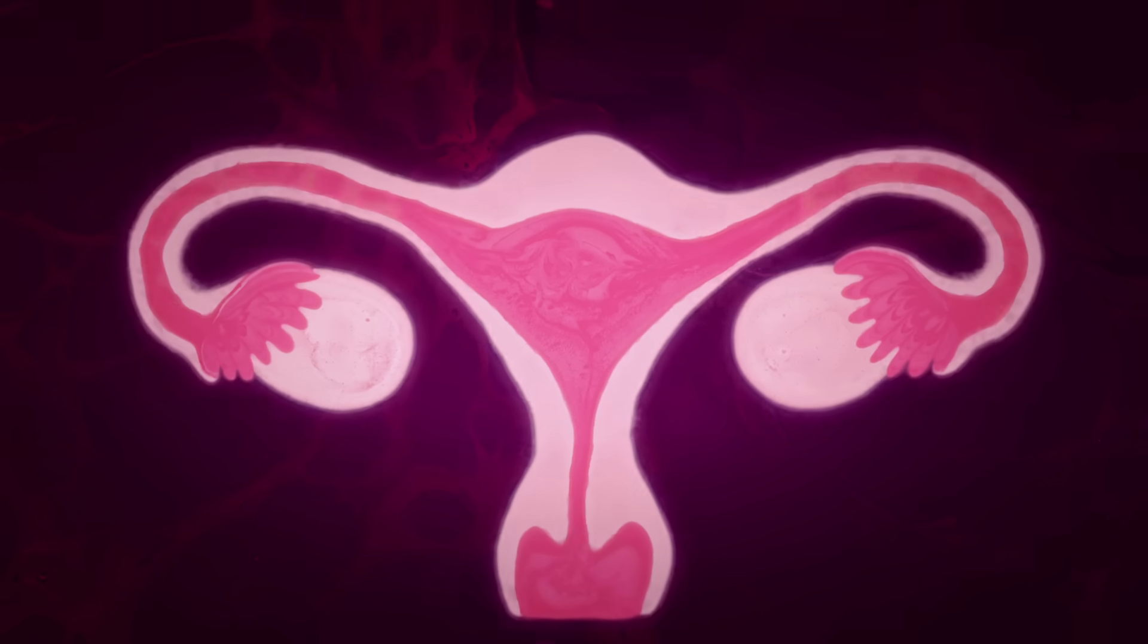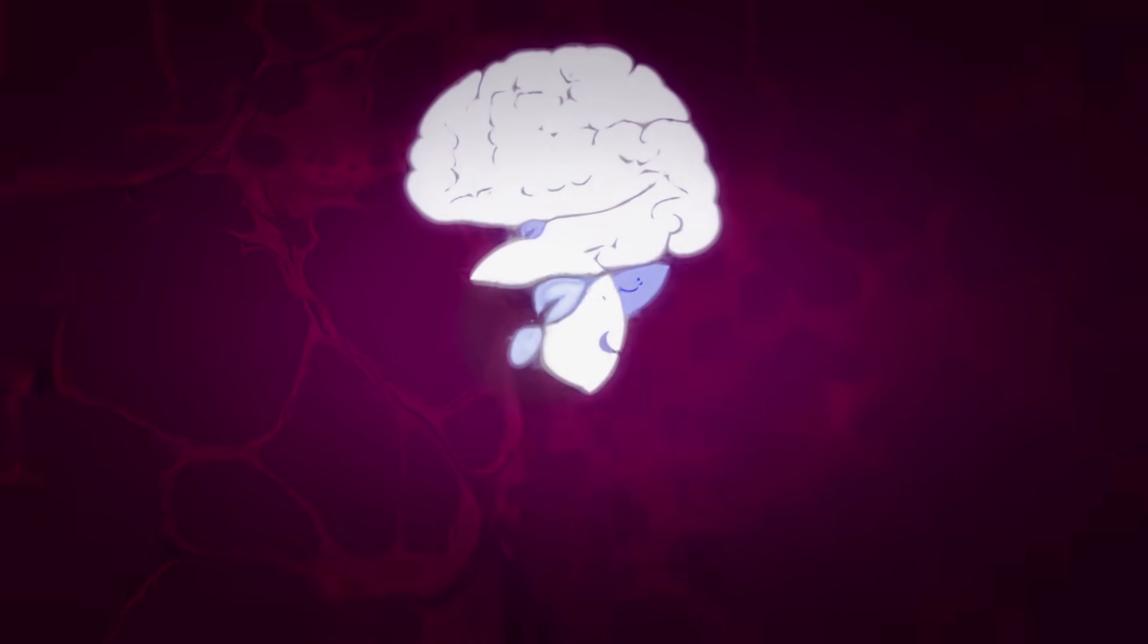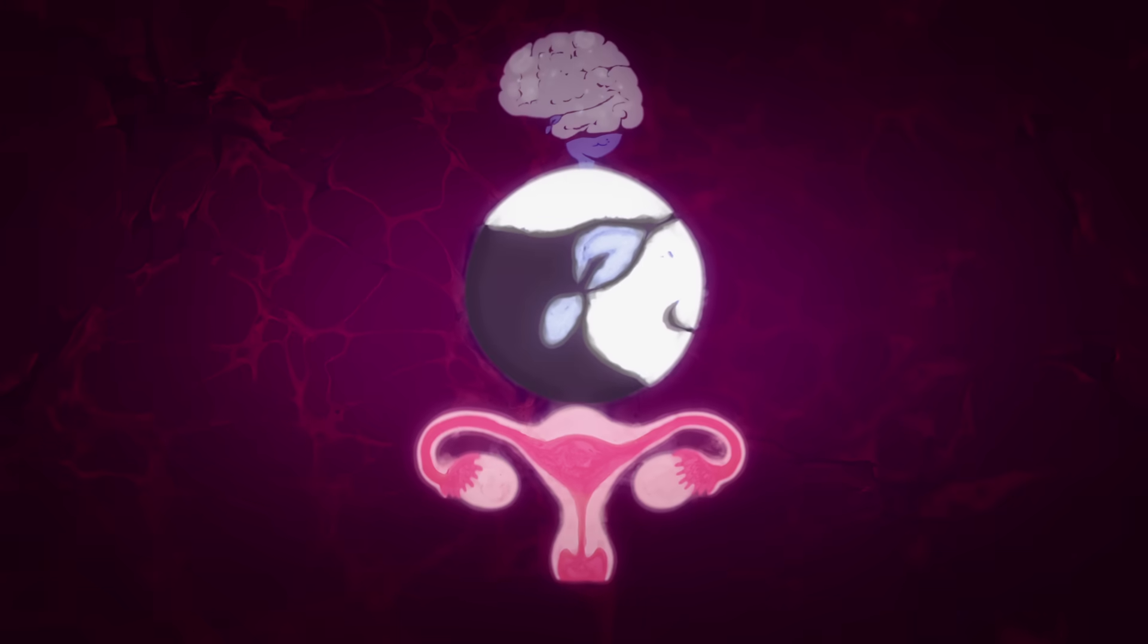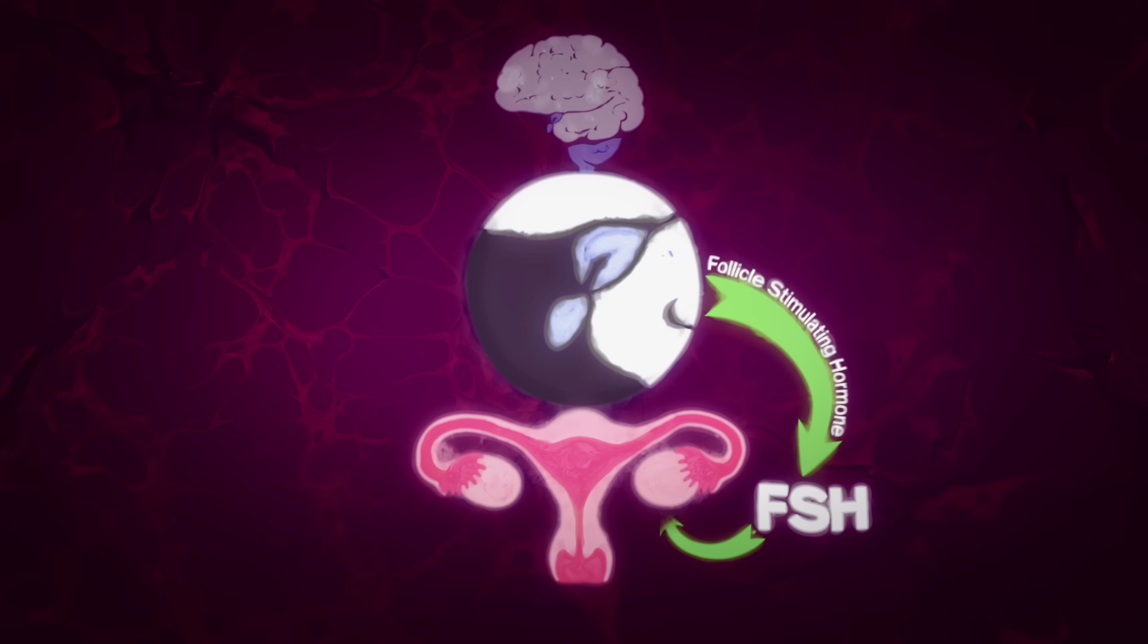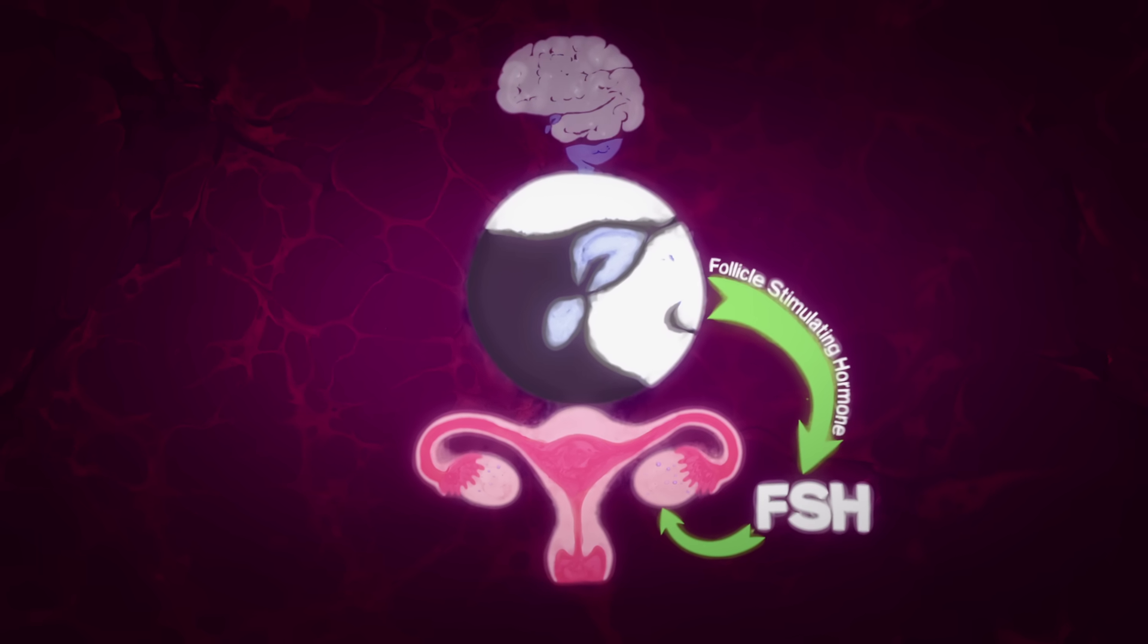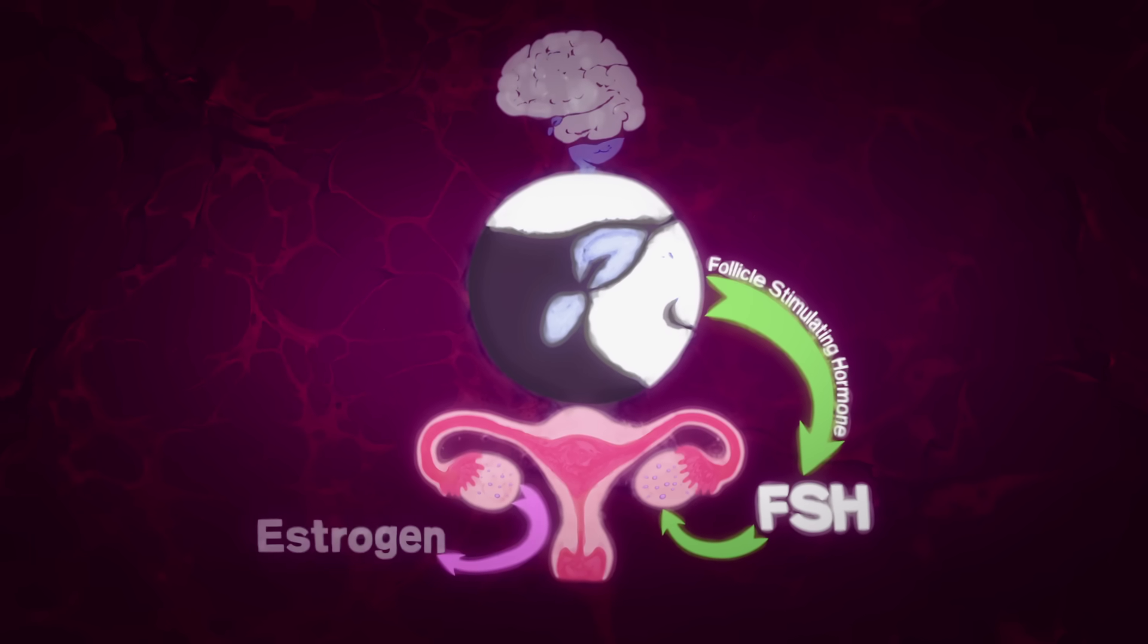Believe it or not, it all starts in the brain. Roughly 15 days before fertilization can happen, the anterior pituitary gland secretes follicle-stimulating hormone, FSH, which ripens a handful of follicles of the ovary that then release estrogen.